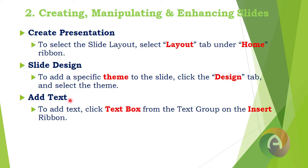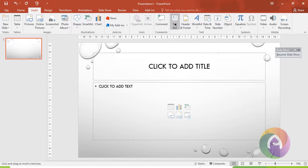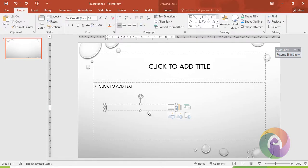Next, add text. Click the text box from the Text group on the Insert ribbon. If you click the text box, the text box option becomes available. We will draw the text box on the slide. This is the text box and the text box contains content.